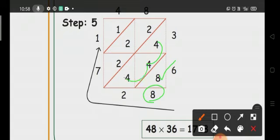Here write 2, carry forward 1 to this place. Then 1 plus 2 equals 3, 3 plus 2 equals 5, 5 plus 2 equals 7. Write 7. And here only the number 1, so write 1.